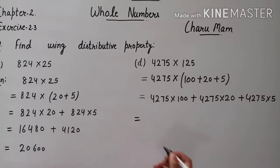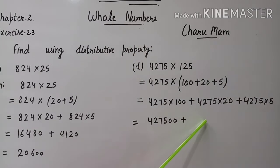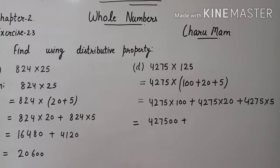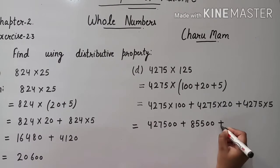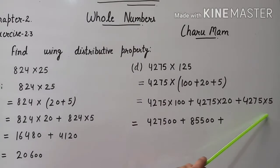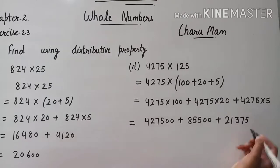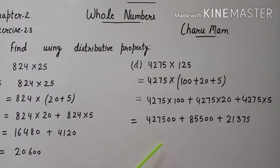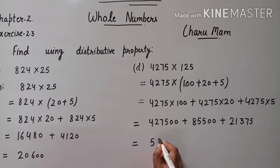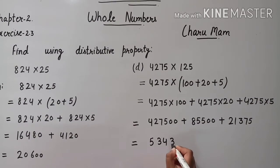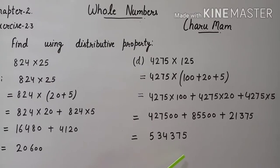100 से multiply करेंगे, then plus, फिर 4,275 को 20 से multiply करेंगे, then plus, फिर 5 से multiply करेंगे. अब हम इन्हें simplify करेंगे. 4,275 को 20 से multiply करने पर — then plus, इन दोनों को multiply करेंगे तो क्या आएगा? 21,375. अब हम इन तीनों को plus करेंगे. तो plus करके क्या आया? 5,34,375.